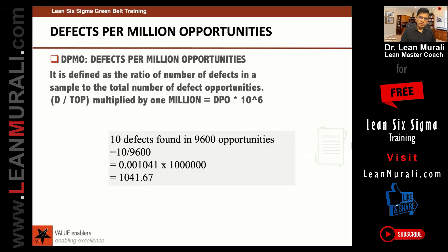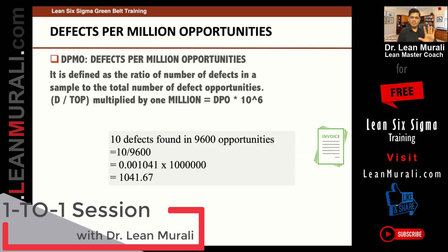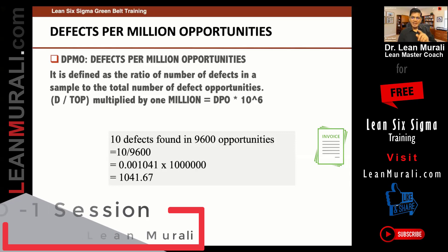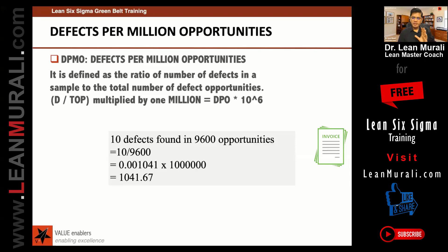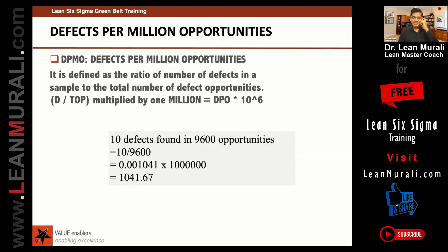Let us take the same invoice example. There are 1000 invoices, each with 10 opportunities, giving 10,000 total opportunities. Suppose one invoice has all errors — name, address, everything is wrong — which means all 10 defects are present. There is only one defective invoice, but there are 10 defects. This is the difference between defects and defective.